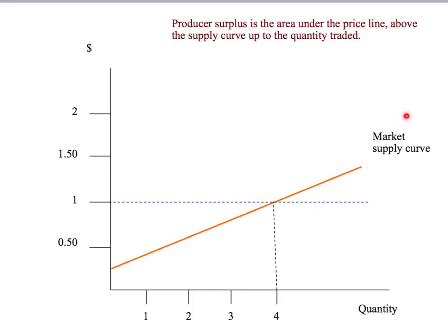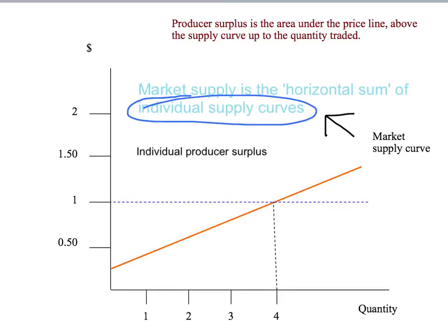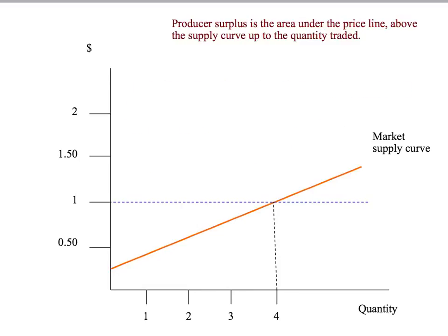To get that, we have to look at the market supply curve. Remember that we get the market supply curve by looking at the horizontal sum of all the individual supply curves. But the individual supply curves give us the individual producer surplus — it's just the area under the price, above the individual supply curve, up to the quantity of the individual seller. So when we add individual supply curves up horizontally, we also add horizontally the individual producer surplus. The producer surplus at the market level is simply the area under the price line, above the market supply curve, up to the quantity traded.